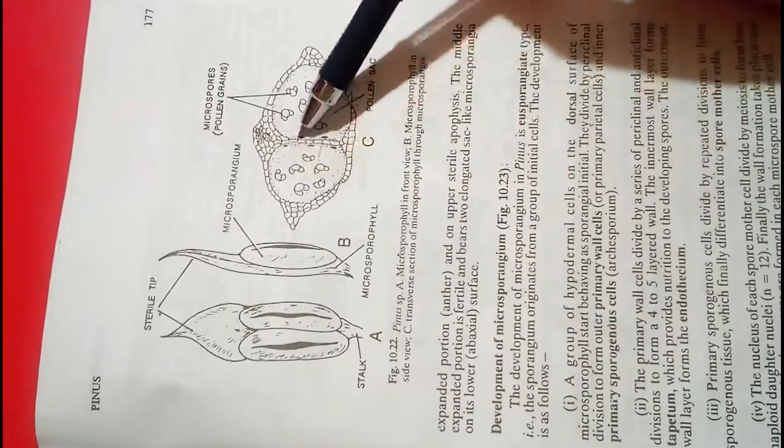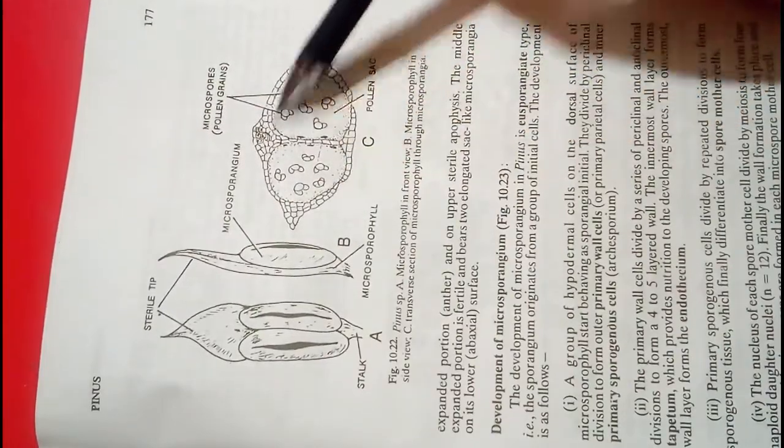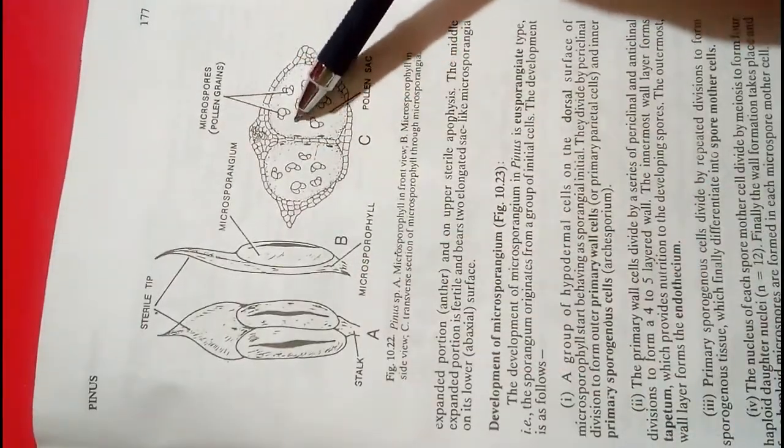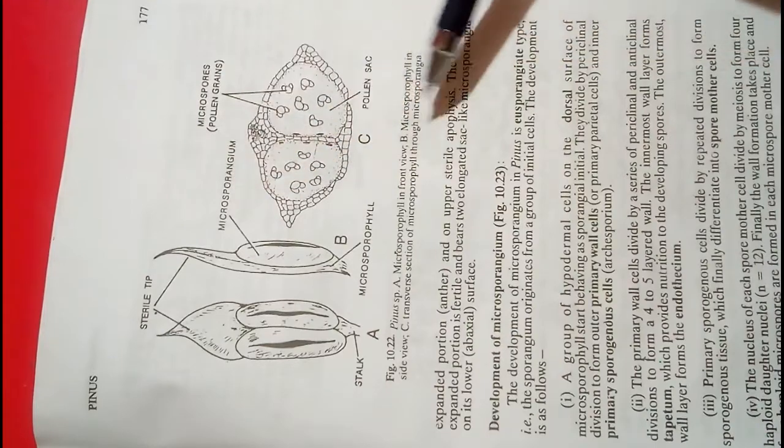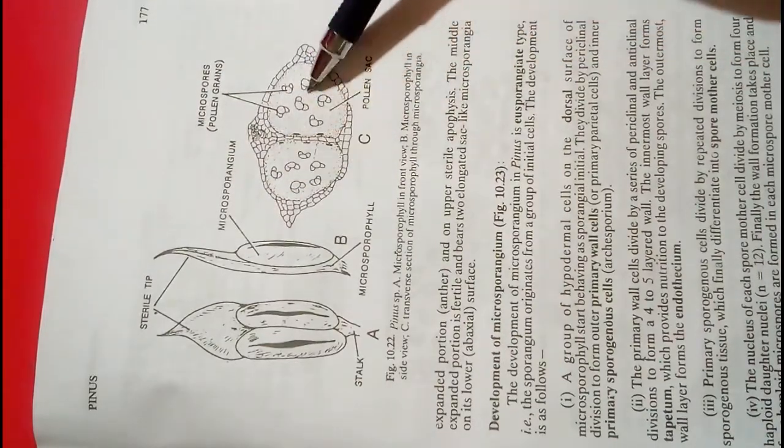You can see a single microsporangium here in this figure. This is the transverse section of the microsporophyll through the microsporangium, showing the presence of the pollen grains.